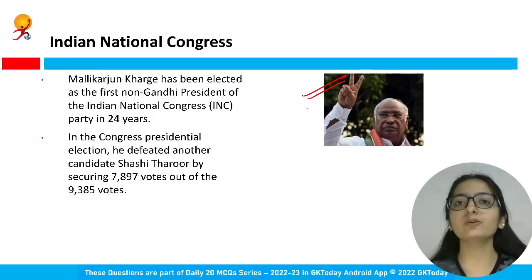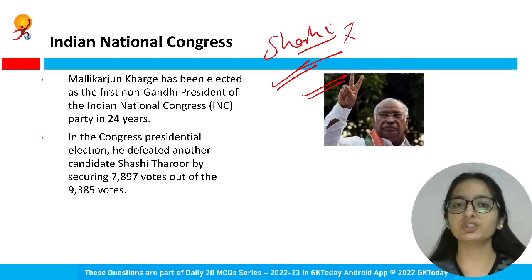The other candidate in the election was Shashi Tharoor. The exact vote count won't be asked in your exam, but do have the general information that the other candidate was Shashi Tharoor. Mallikarjun Kharge won and is now the president of the Indian National Congress.